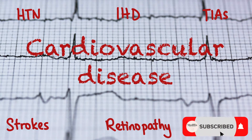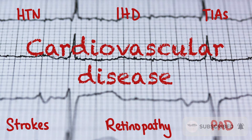Cardiovascular disease is a very common complication of diabetes mellitus. This can include hypertension, ischemic heart disease, TIAs or strokes, retinopathy and peripheral artery disease.